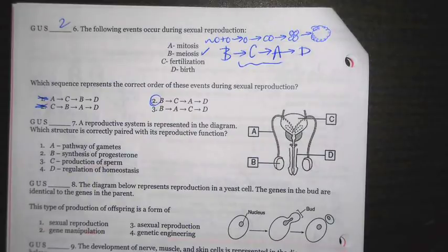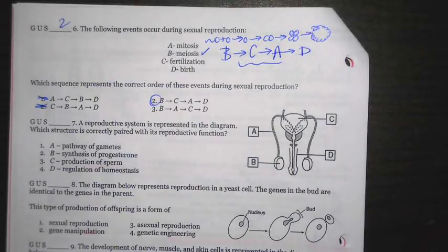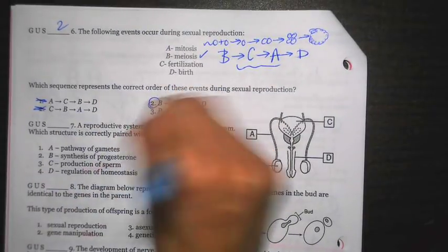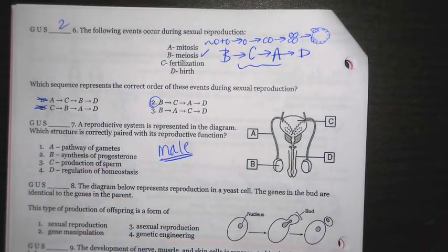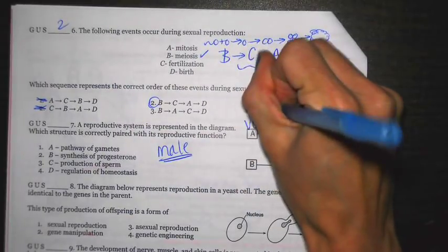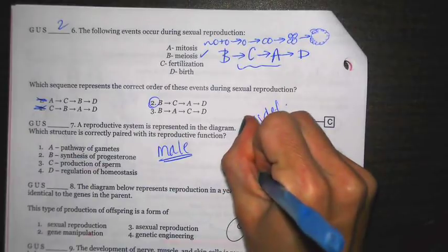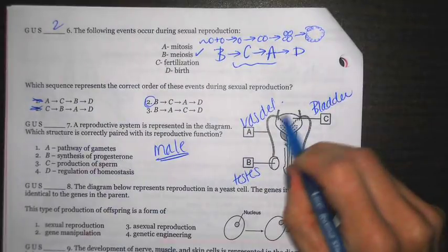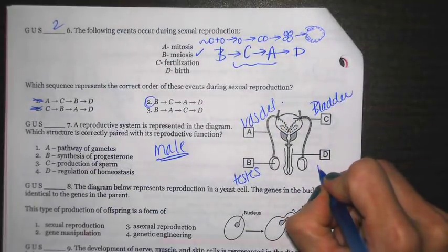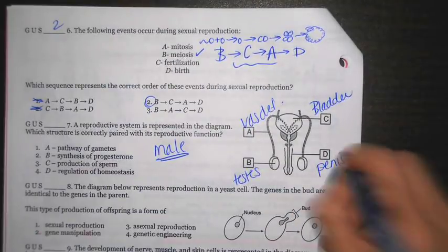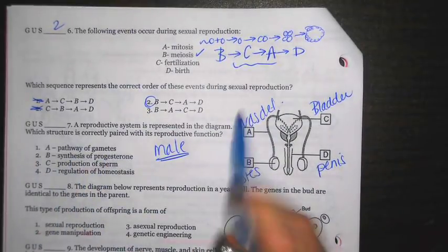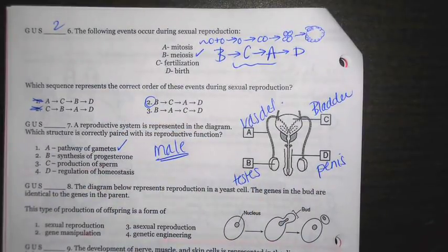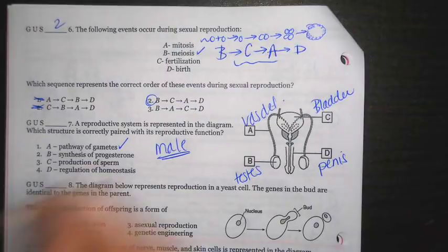Next up, another diagram of reproductive system is represented in the diagram, which structure is correctly paired with its reproductive function. Now they don't say you have to do this. A good idea is always to write down what reproductive system you're looking at, which is male. If we go through and we label them, A is going to be the vas deferens, B is going to be the testes, C actually has nothing to do with reproduction, although everyone always gets that one confused. It's the bladder. And then D is going to be the penis.